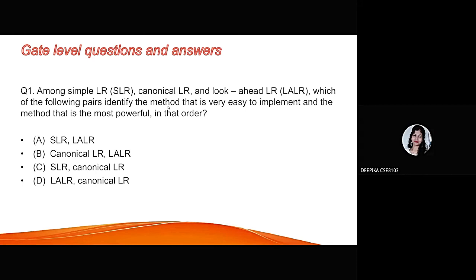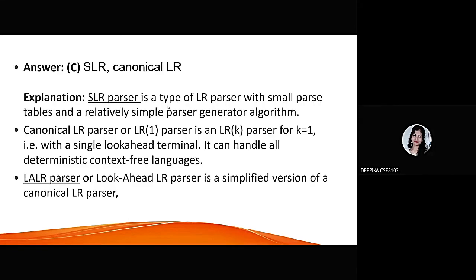Question number one. Among simple LR, in short SLR, canonical LR, CLR, and look ahead LR, in short LALR, which of the following pairs identify the method that is very easy to implement and the method that is the most powerful in that order? Answer is SLR, canonical LR. SLR parser is a type of LR parser with small parse tables and a relatively simple parse generator algorithm. Canonical LR parser or LR1 parser is an LR(k) parser for k equals 1, that is with a single look ahead terminal. It can handle all deterministic context-free languages. LALR parser or look ahead LR parser is a simplified version of a canonical LR parser.